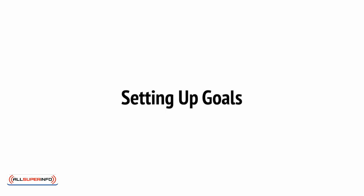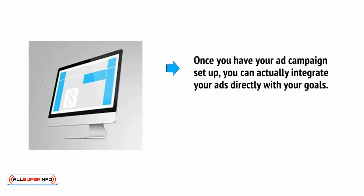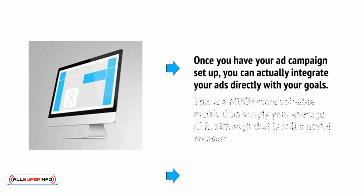You can use Bing Ads to set up goals and then see how customers are interacting with those goals. You may recall that we discussed goals in an earlier video in the context of Google Analytics, and how you could use these to identify the best keywords for your ad campaigns. Once you have your ad campaign set up, you can actually integrate your ads directly with your goals. This is a much more valuable metric than simply your average CTR — your click-through rates — although that is still a useful measure.